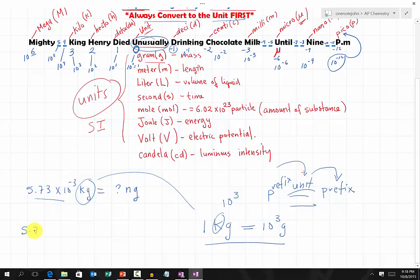So we have 5.73 times 10 to the negative 3 kilogram times. If this is kilogram, the one kilogram over here would be on the bottom. Then we have 10 to the third grams on the top. Now we have gram, we want to convert to nanogram.